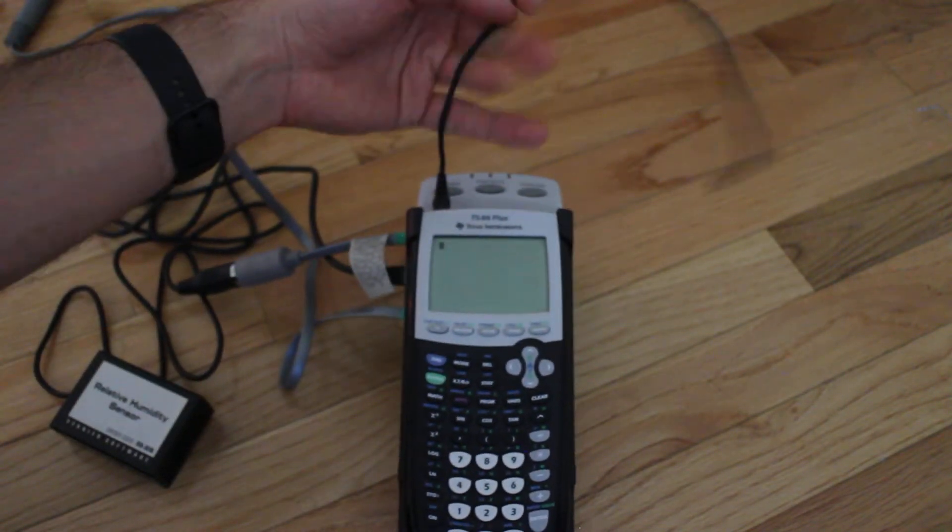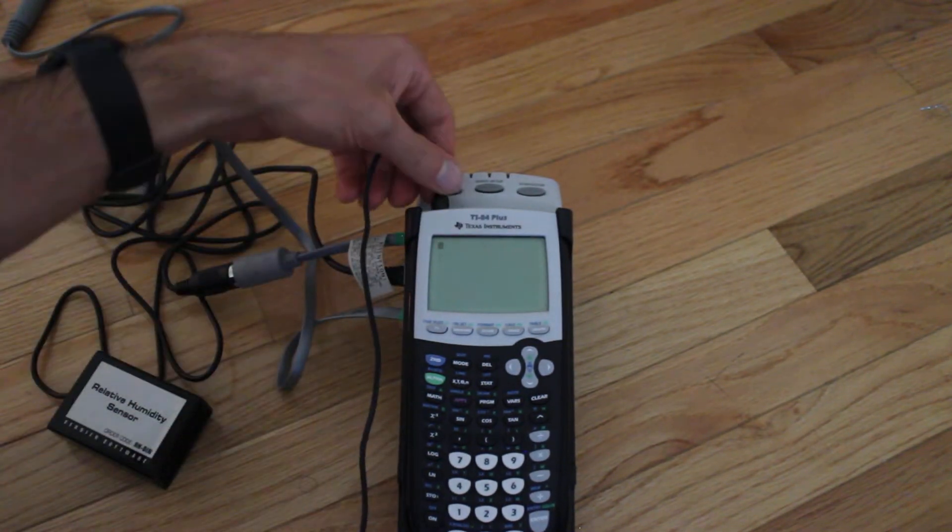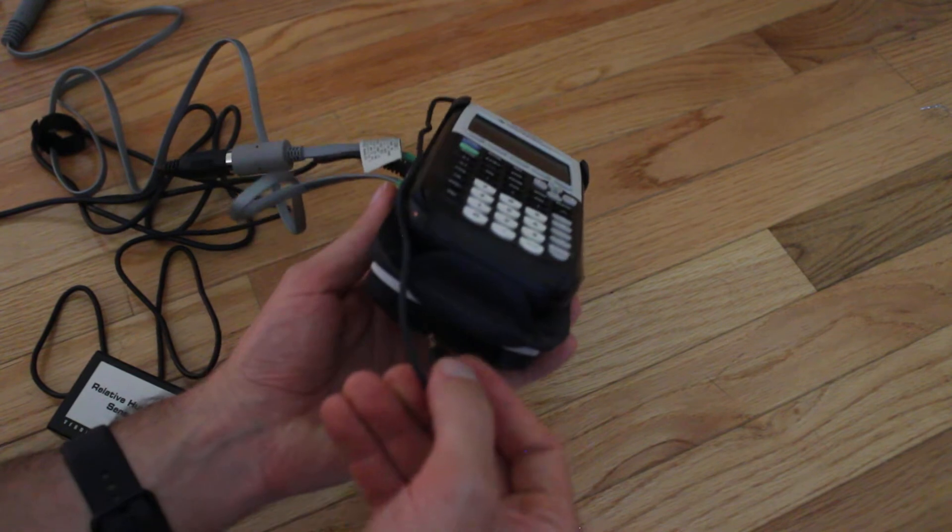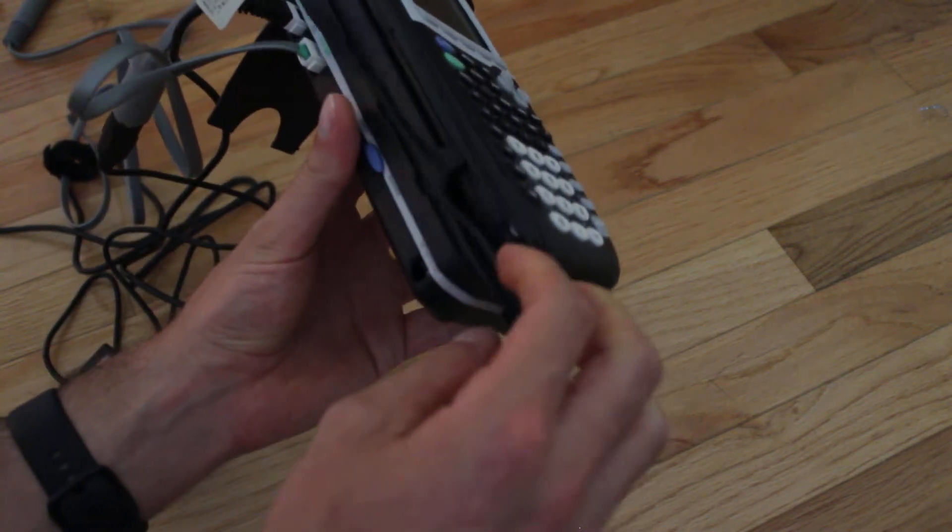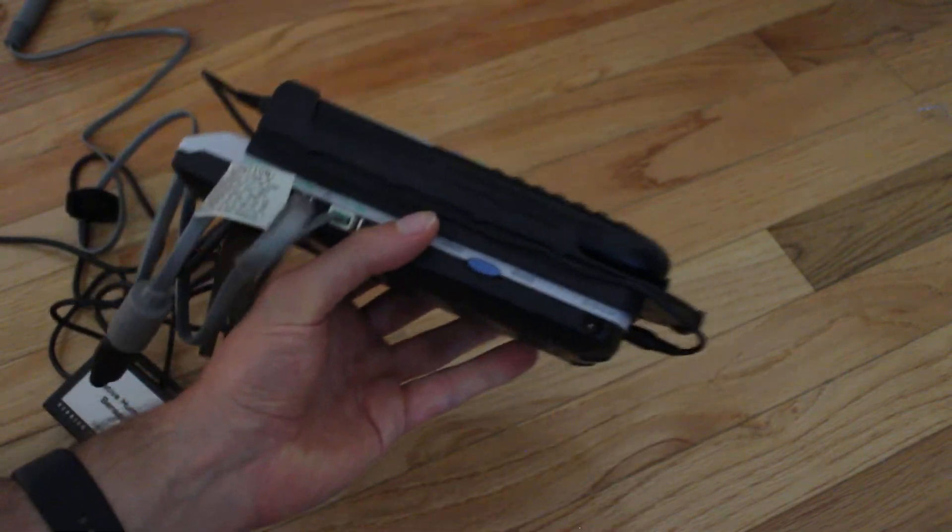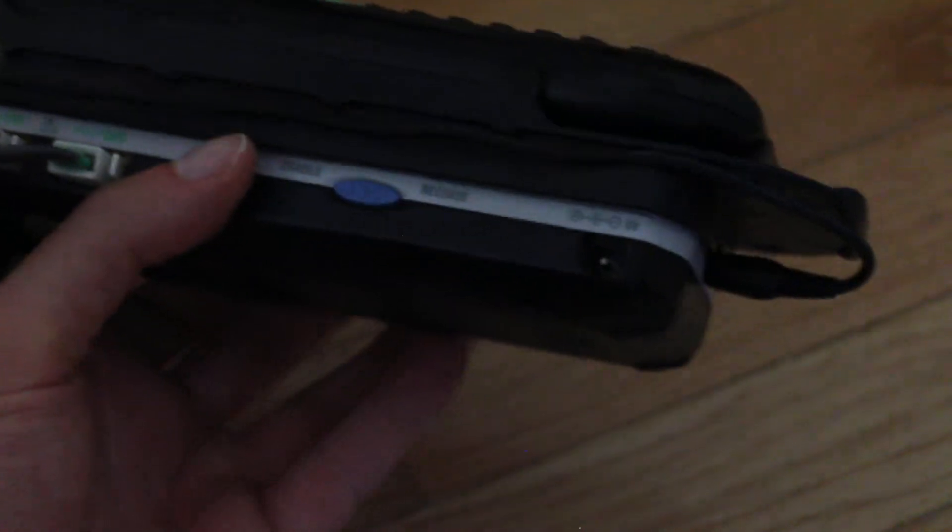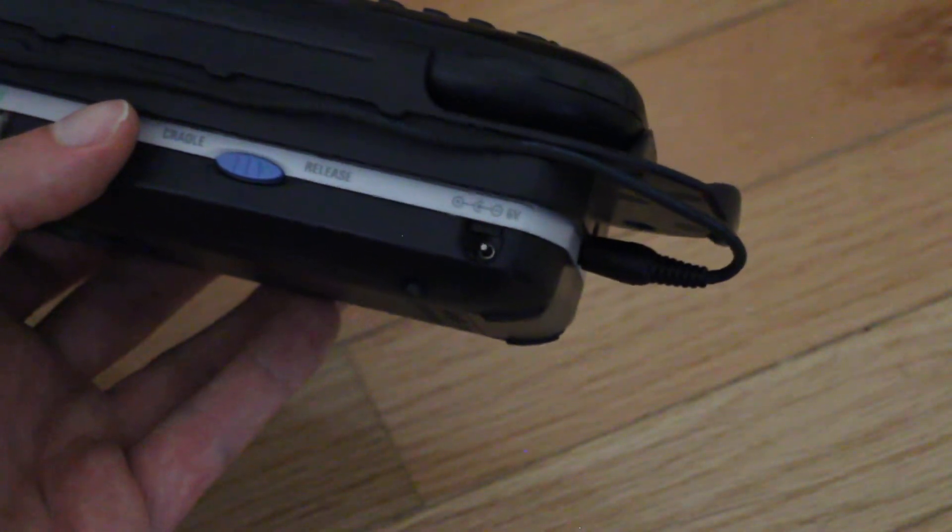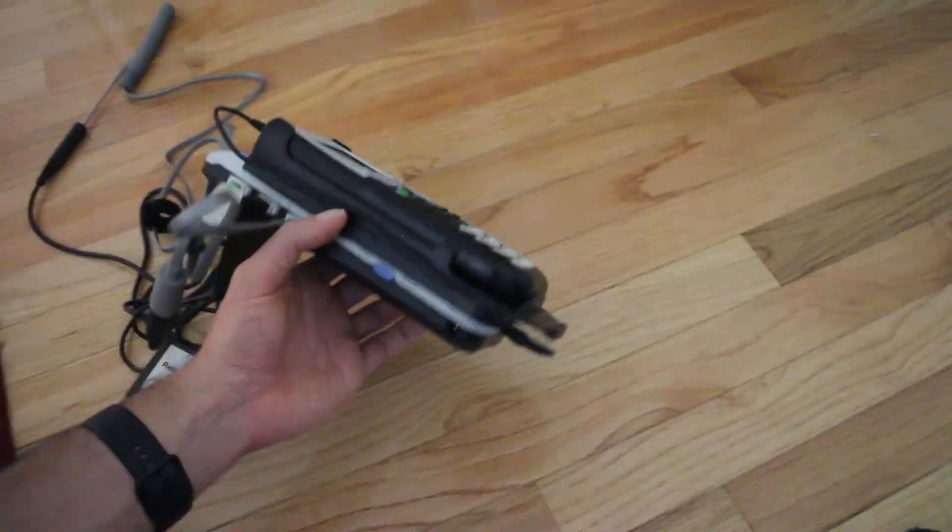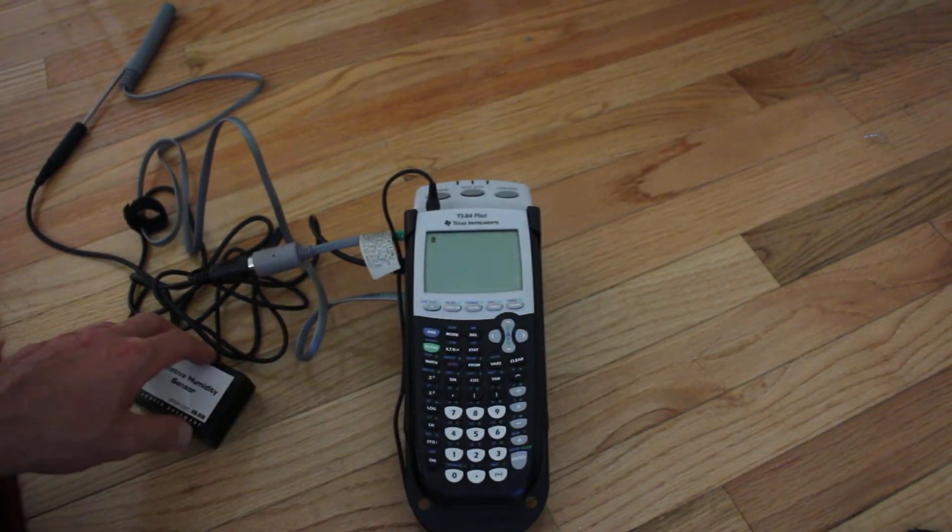And I'll connect this cable down to the bottom of the CBL2 right here. This can also take a power adapter, six-volt adapter. So you don't necessarily have to run this off batteries. Let's go back to the program in order for it to collect the data.